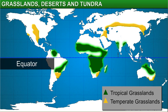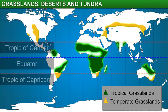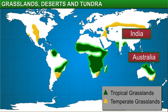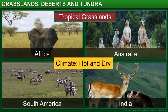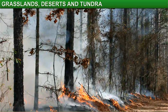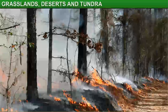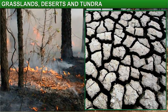Tropical grasslands are located near the equator between the Tropic of Cancer and the Tropic of Capricorn. These can be found in Australia, India, Africa, and South America. The climate in these areas is usually hot and dry throughout the year. The rainfall can vary from heavy to moderate. Some of these areas experience a season of heavy rainfall followed by long bouts of drought. During the drought season, natural fires are a common phenomenon seen in the grasslands.